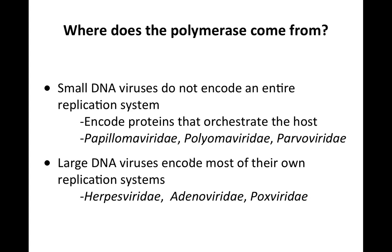Where does the DNA polymerase come from? Small DNA viruses typically do not encode a DNA polymerase — they encode proteins that manipulate or orchestrate the host to replicate their genomes. This includes members of the papillomaviridae, polyomaviridae, and parvoviridae. Many large viruses encode most of their own replication systems, including the DNA polymerase — and that includes herpes viruses, adenoviruses, and poxviruses. But they still need some help from the host cell.